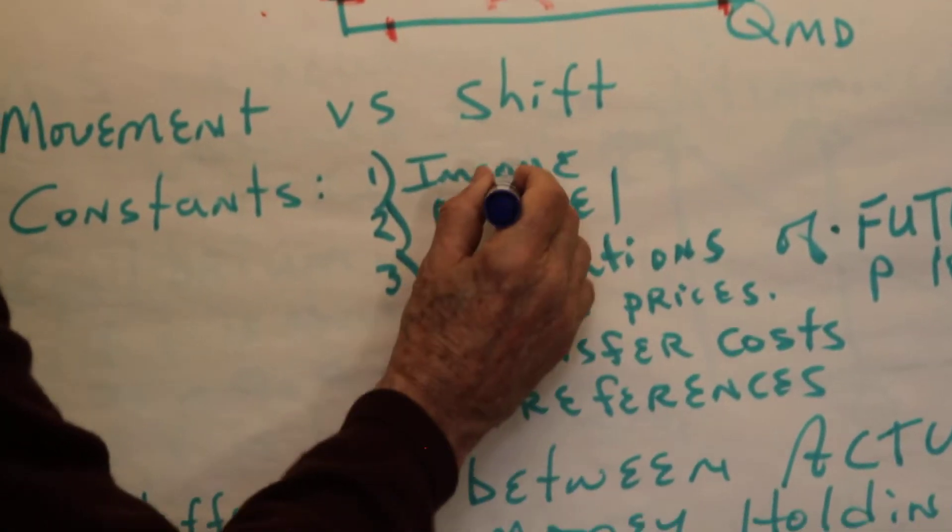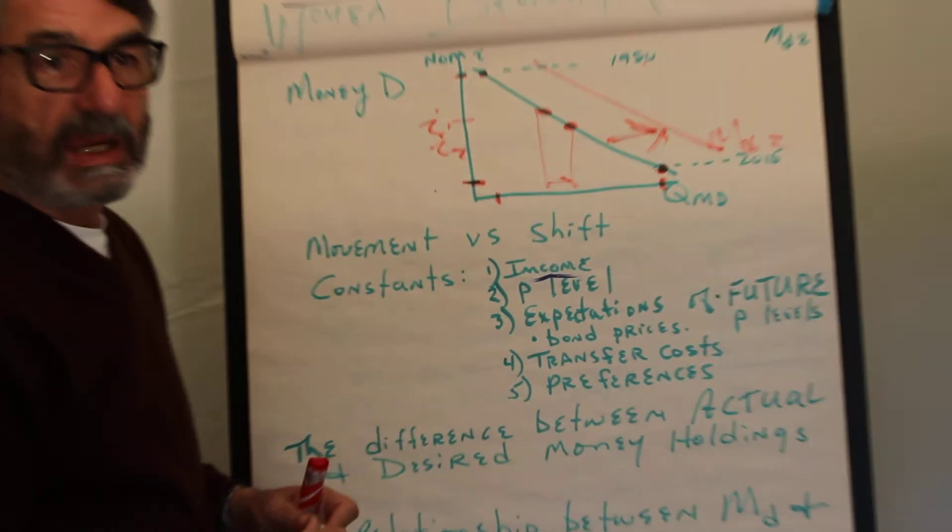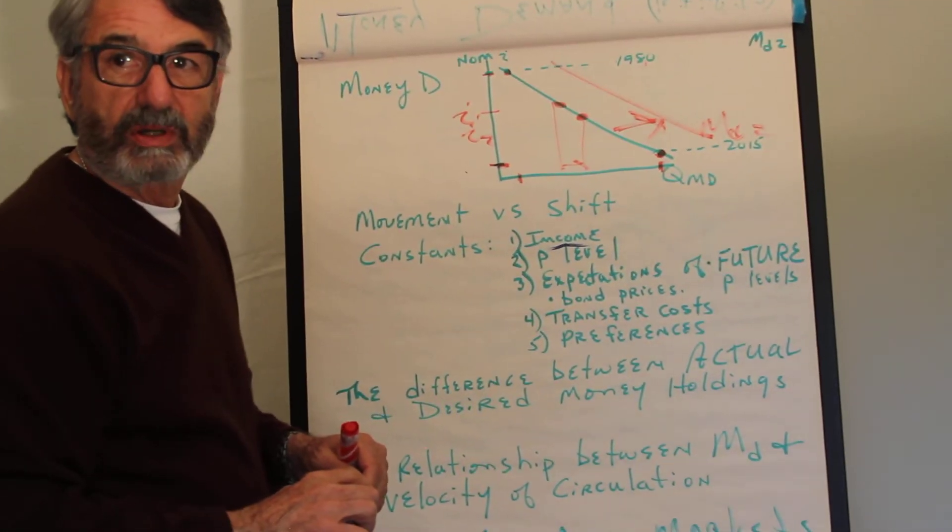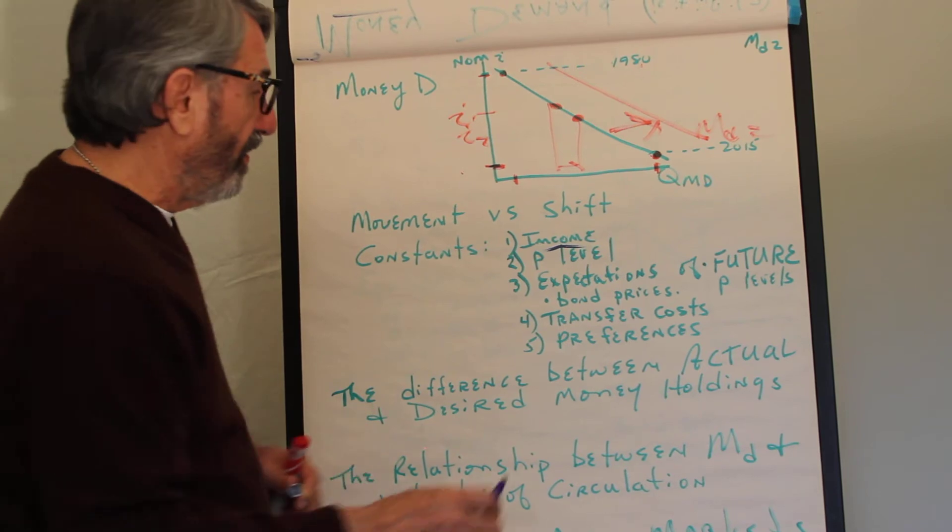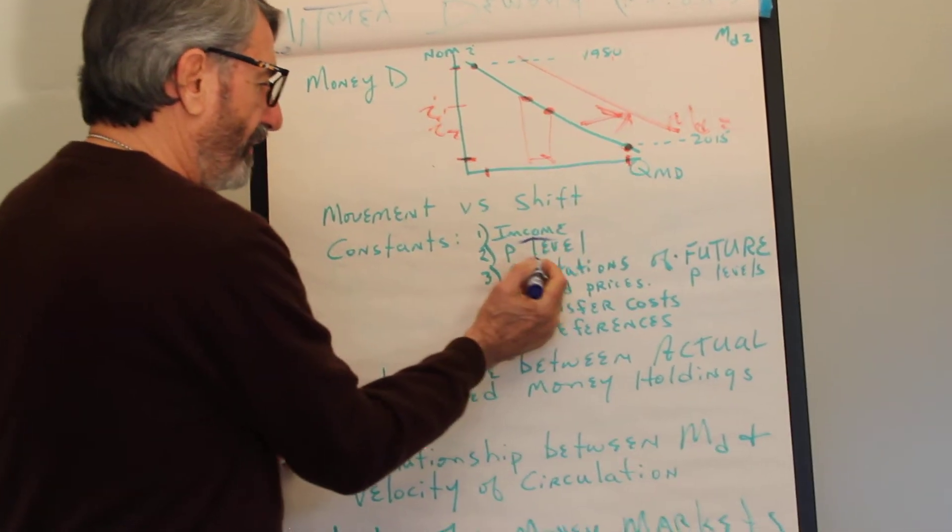Like income. It's a transactions demand, so when income rises people do more transactions and as a result they want to hold more money. That would cause a rightward shift.